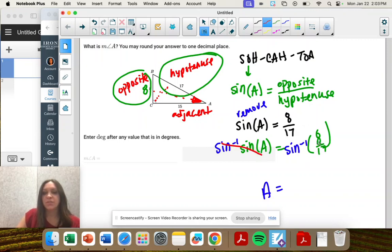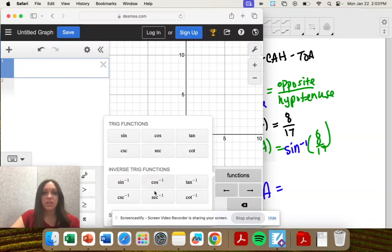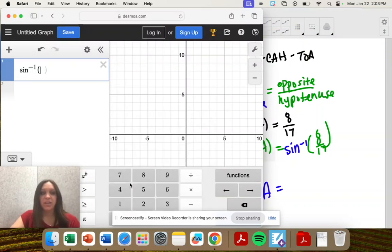So now we're just left with A, and then this goes in the calculator. It's under functions, right underneath, sine inverse of 8 over 17.